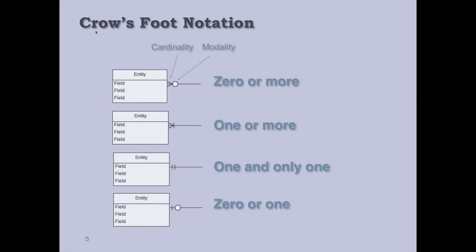We are using crow's foot notation. Each rectangle is an entity, the name of that entity is written in the top part of the rectangle, and these fields indicate what attributes that entity has. This symbol which is closer to the rectangle represents cardinality, which is the maximum relationship. The value of cardinality will be either one or many, and many is represented using this crow's foot notation.